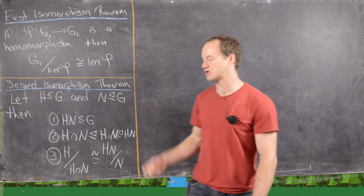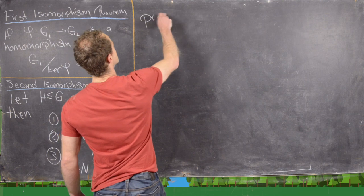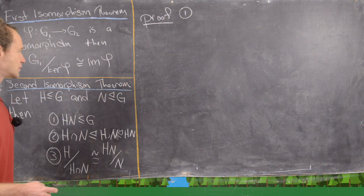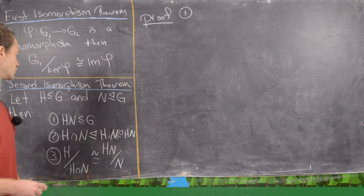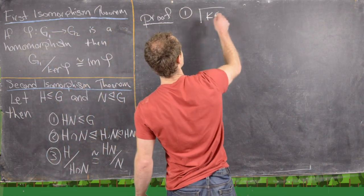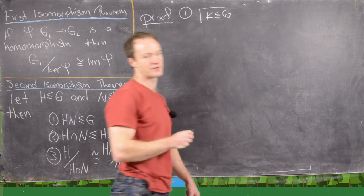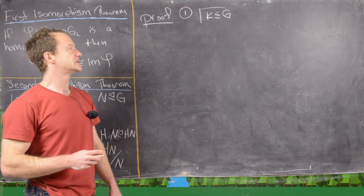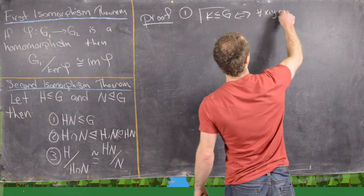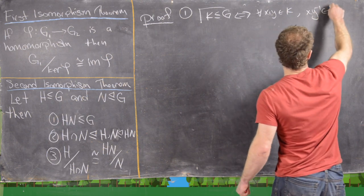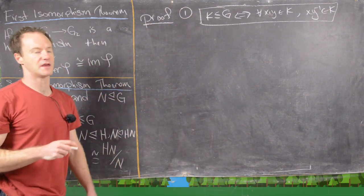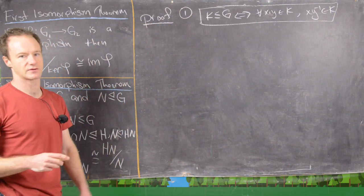To prove part one, we'll use the subgroup test — my favorite way to prove something is a subgroup. The subgroup test says that K is a subgroup of G if and only if for all x and y in K, xy⁻¹ is also in K. So we only have to show that one thing is in the subgroup instead of three things.